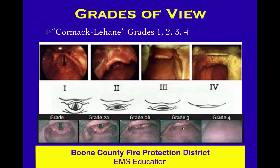With Grade 3 you know where the glottic opening is — it's behind and up from the epiglottis — but you can't actually see it. This will drive your technique, and that's where we like to use bougies, which we'll talk a lot more about later. Grade 4 is pretty much pink mush — you're looking in there and that's all you can see; you can't identify the epiglottis or any of the main structures.